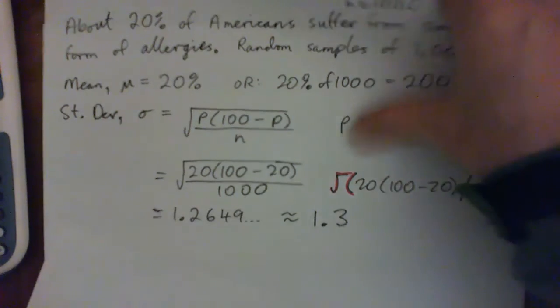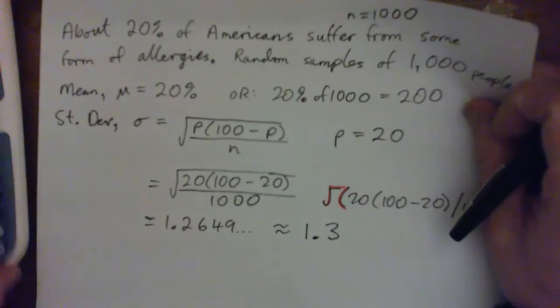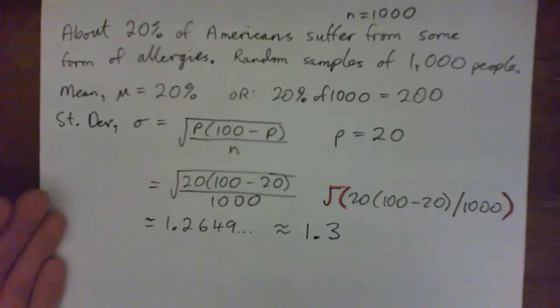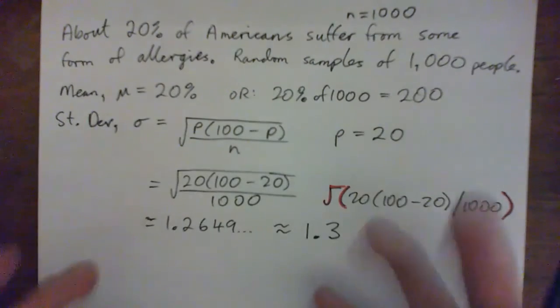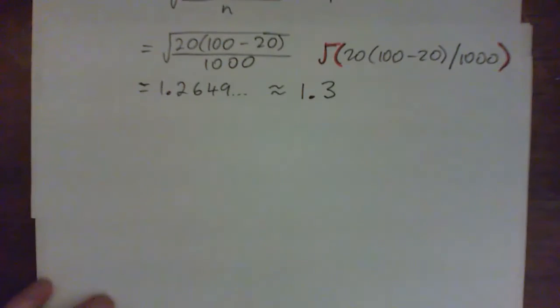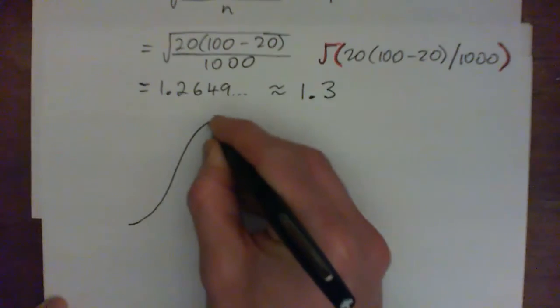What's going on here is the Central Limit Theorem. It tells us that when we look at random samples of large groups of things — not a random sample of one person, but big groups — you can always use the normal distribution. It doesn't matter how things are distributed in the population; once you take random samples of big groups, you can always assume it's a normal curve.